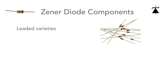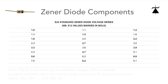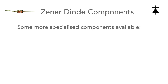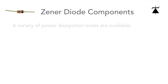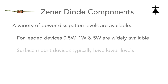In terms of the components themselves, there's a good variety available. They come in both leaded and surface mount versions, and the voltages available conform to the E-series values from around 2.7 volts up to a maximum of around 30 to 35 volts, very roughly. There are some specialised components available with voltages up to 100 or even 200 volts. They come in a variety of dissipation levels — 500 milliwatts is common for small leaded versions, but 1 watt and even 5 watt versions are available. Dissipation levels are lower for surface mount Zeners.